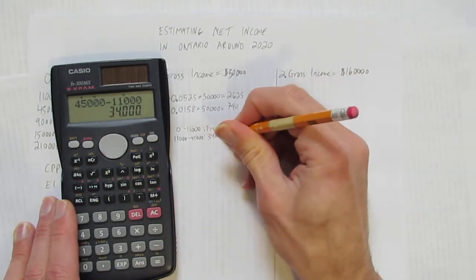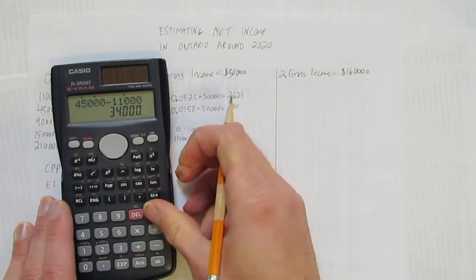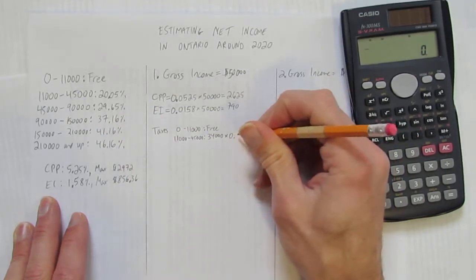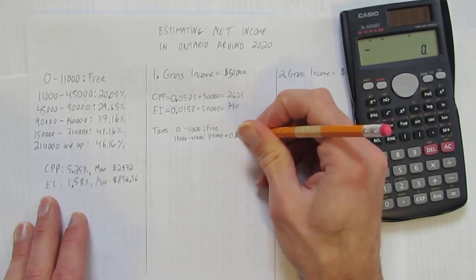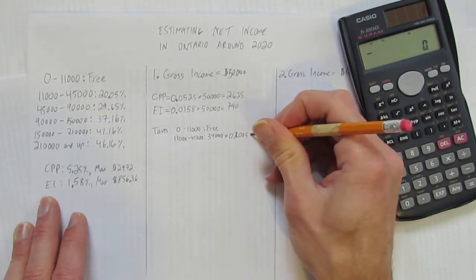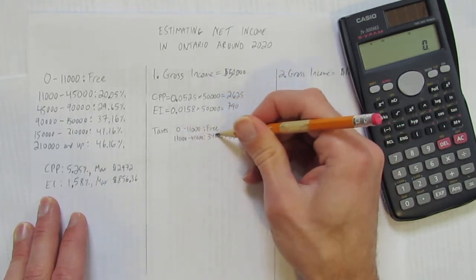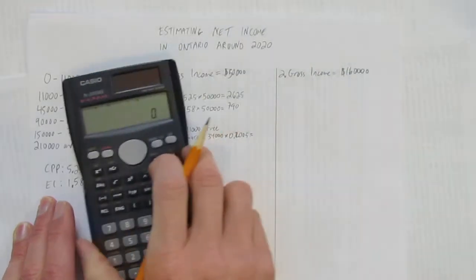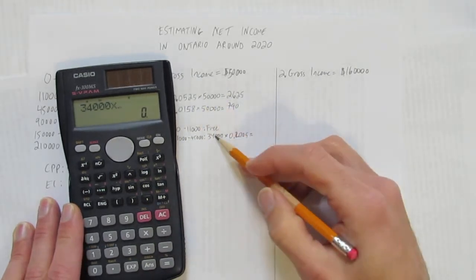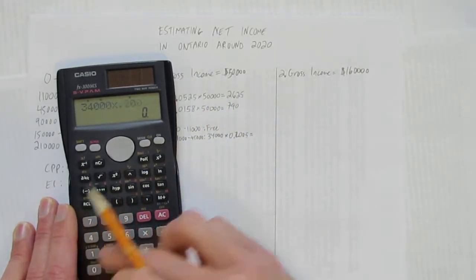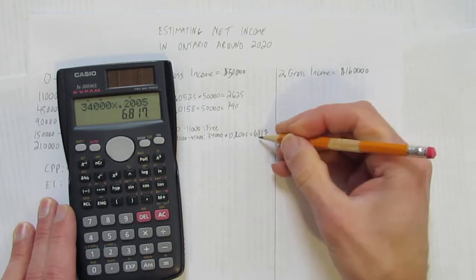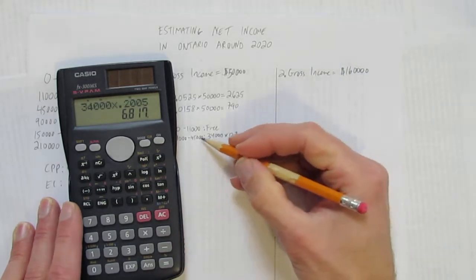Each dollar in there, how many dollars? Each of those $34,000 gets taxed at 20.05%. Convert to a decimal, 0.2005. So this is the tax I'm paying on all the dollars. There's $34,000 of them between this and this. $34,000 times 0.2005. So you pay $6,817 on the money between here and here.